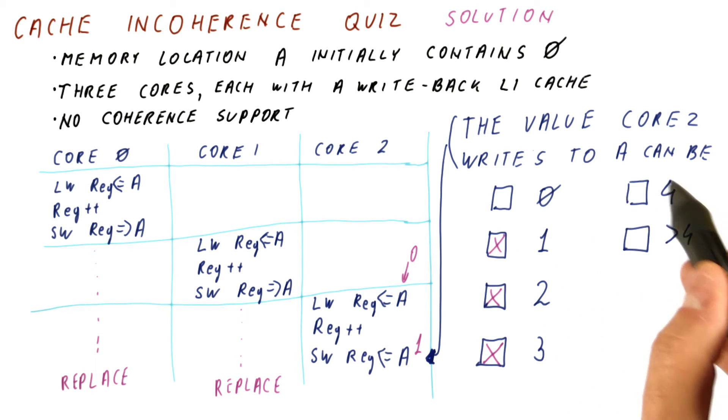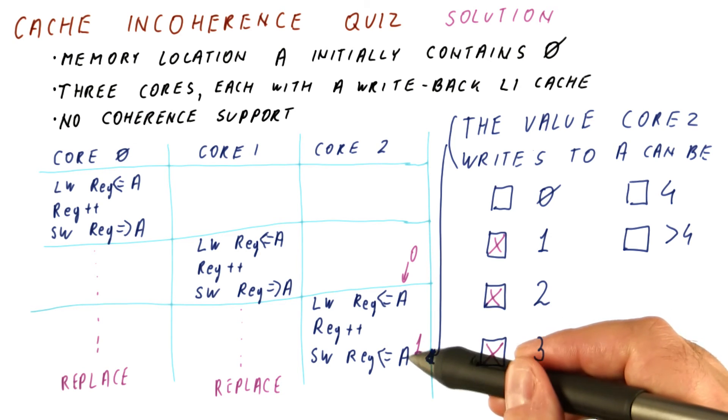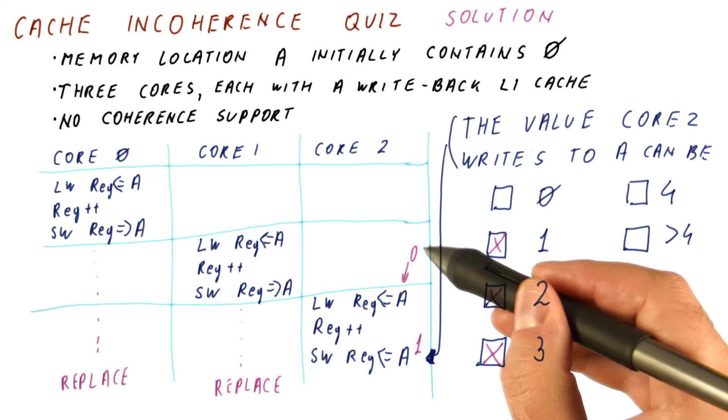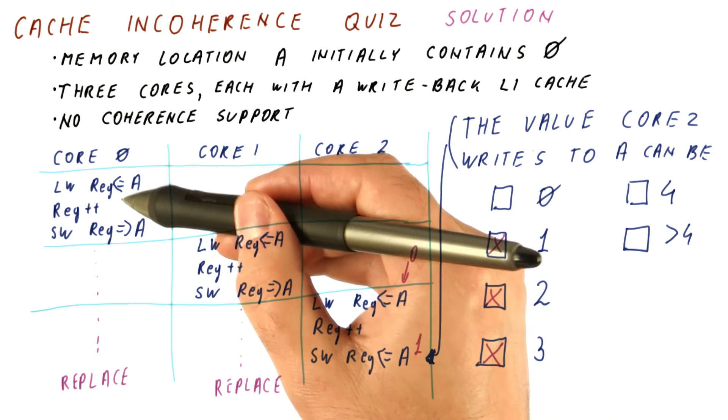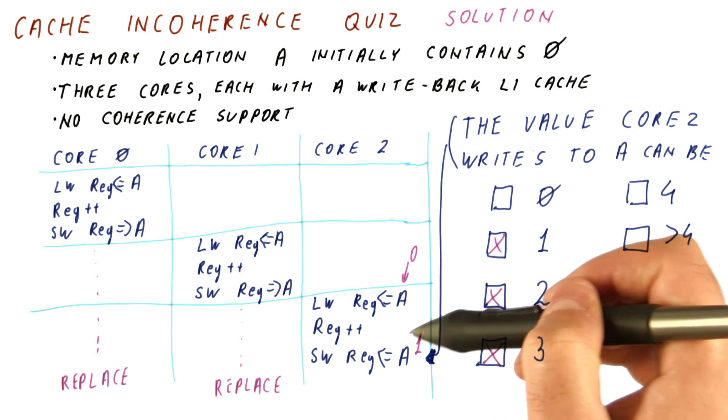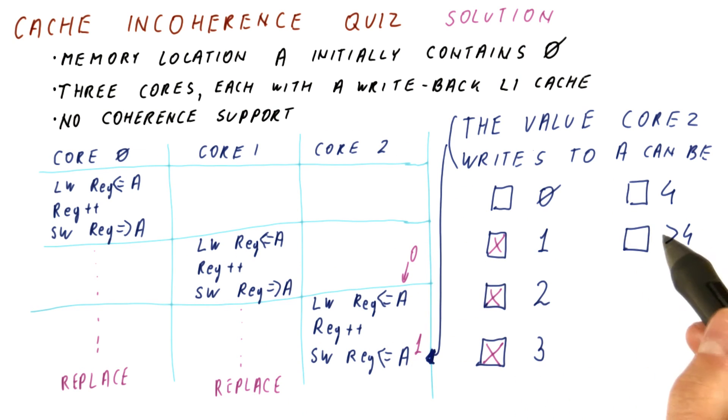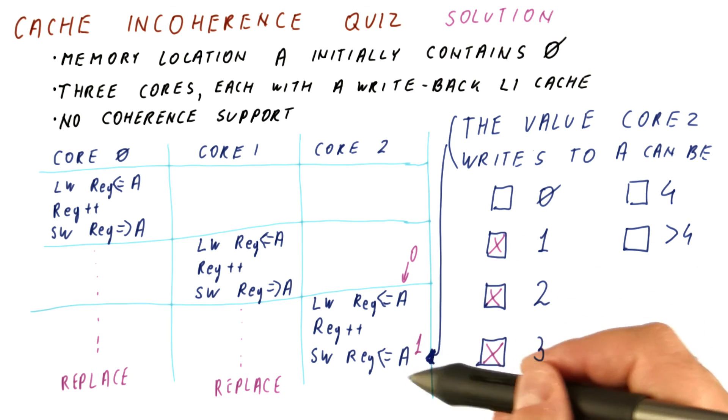Similarly, 4 is not possible, because for 4 to be produced here, we need to read a 3. And there is just no way that two increments from 0 can produce a 3 here. And similarly, more than 4 is not possible. So the correct answers here are 1, 2, and 3 are possible at this point.